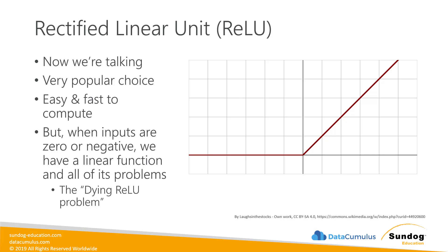An answer to these problems is what's called the rectified linear unit, or ReLU for short. This is a very popular choice these days. It's very simple: just a linear straight line on the positive side and a flat zero on the negative side. The main benefit is that it's very easy and fast to compute — computers are very efficient at computing straight lines, as opposed to trigonometry — so models converge quickly. There are also no vertical lines, so we don't have calculus problems from infinite gradients.